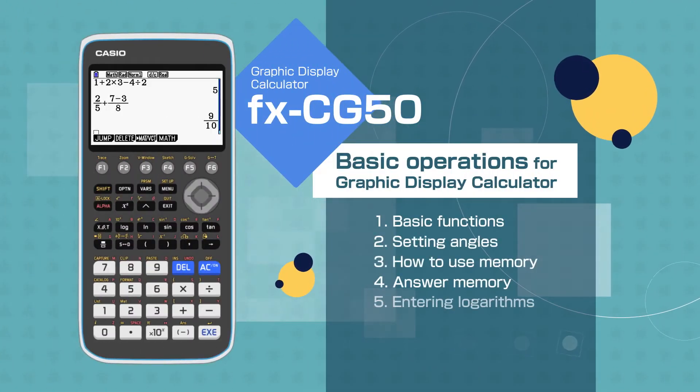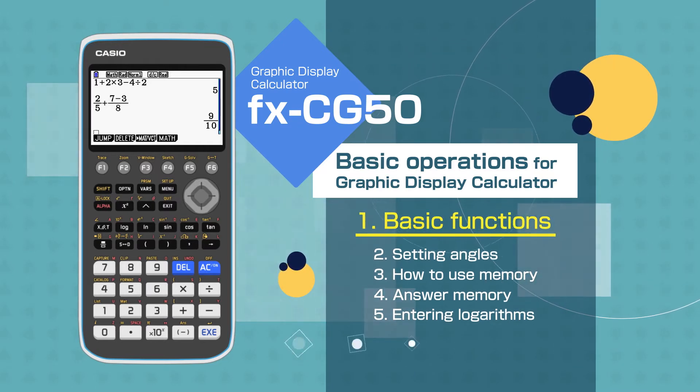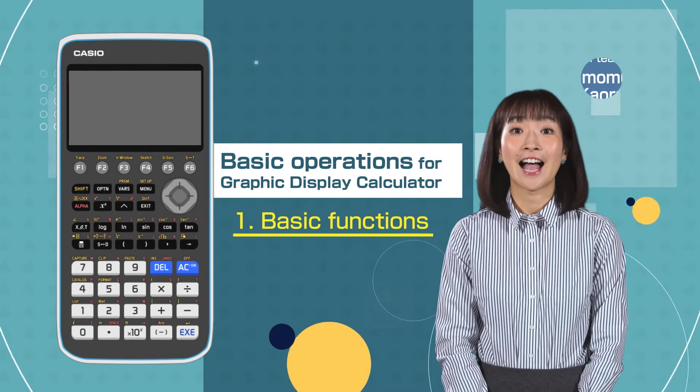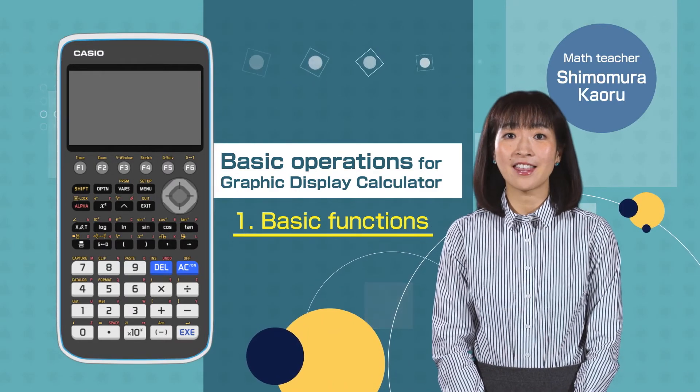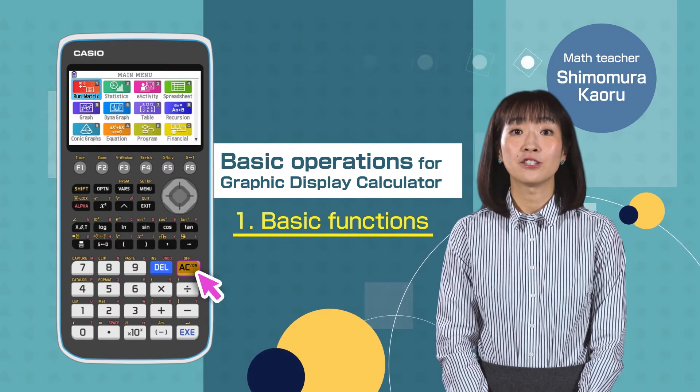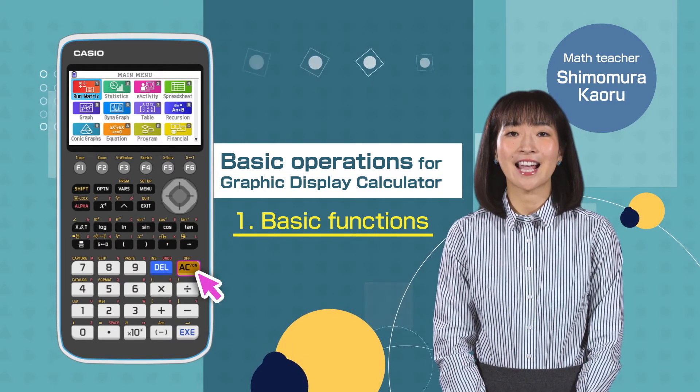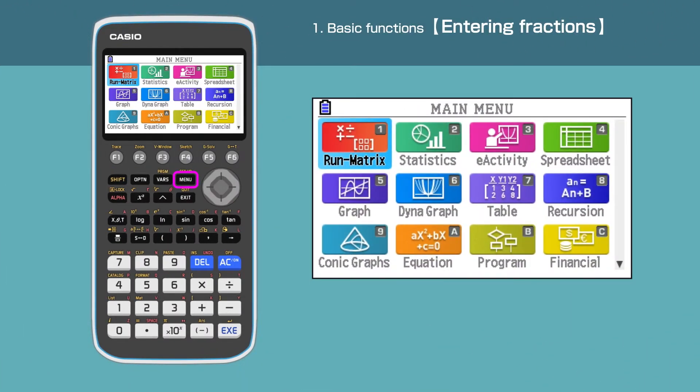Hi everyone, in this video we'll show basic operations for the graphic display calculator and how to enter equations with the Casio FX-CG50. Switch on the calculator by pressing the AC button, then press the menu button to open the main menu.